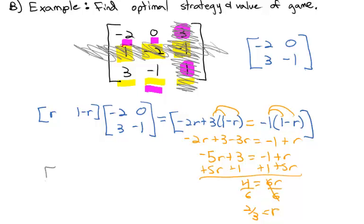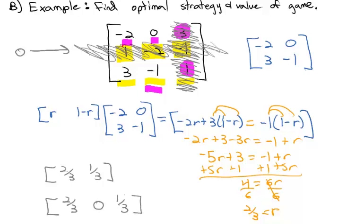So in terms of the two-by-two game, the row strategy is 2/3 and 1/3. However, that's the strategy for the two-by-two matrix. Remember the second row we said we were never going to play — it was reduced by dominance — so we need to represent that in our final answer. The full row strategy is: 2/3 for the first row, 0 for the second row (never play it), and 1/3 for the third row. Don't forget to include a zero for the eliminated row.